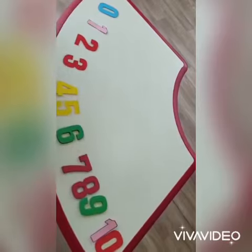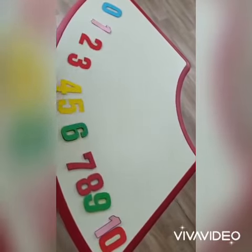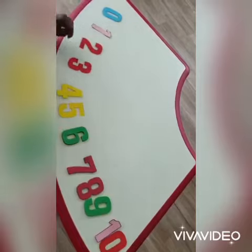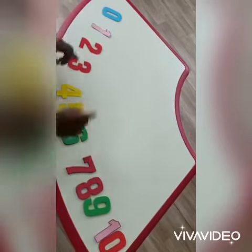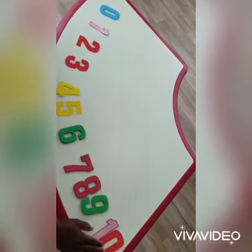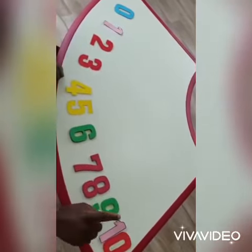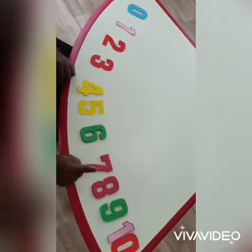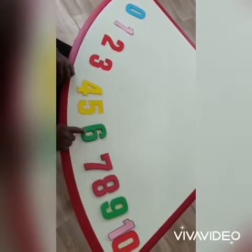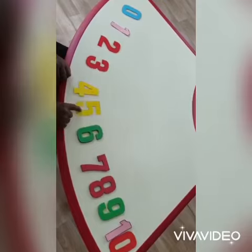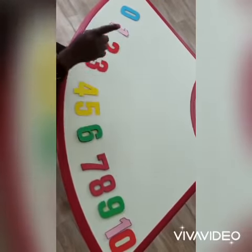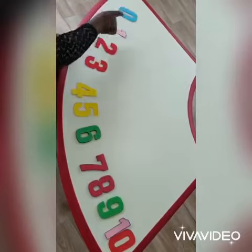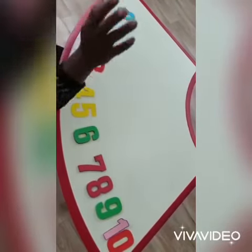Now let's count backwards. Backwards. We start counting from the big number to the small. So let's count. Ten, nine, eight, seven, six, five, four, three, two, one, zero.